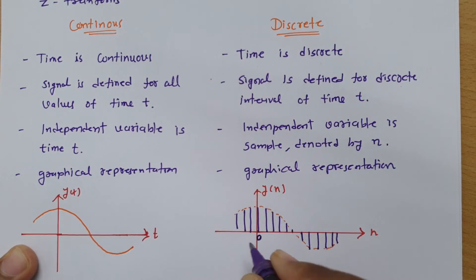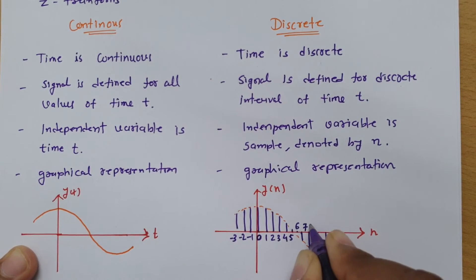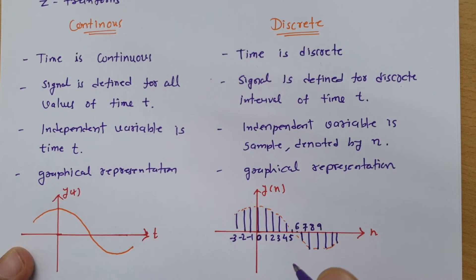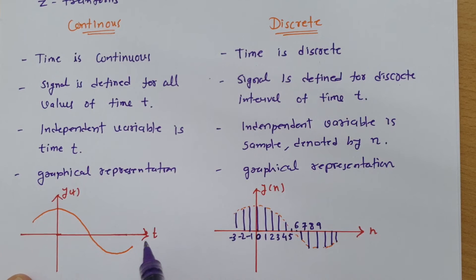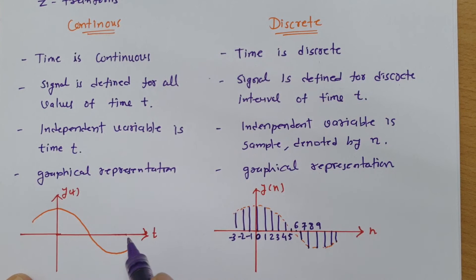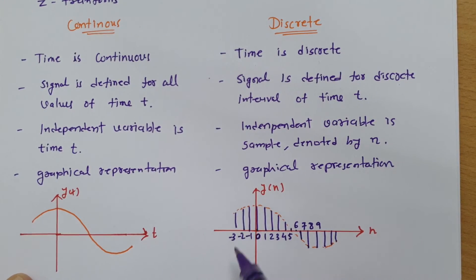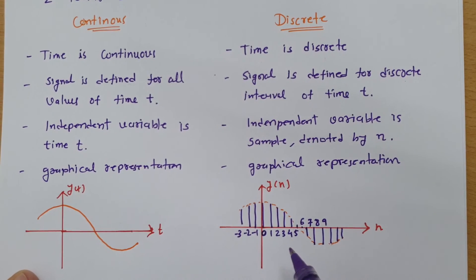So here, if I say this is a reference 0, then here minus 1 sample is there, minus 2, minus 3, and on the positive side 1, 2, 3, 4, 5, 6, 7, 8, 9. This is how samples are there. This sample is denoted by variable n, and here the signal is continuous with respect to time. One can say the value of magnitude for this given signal y of t is happening at all intervals of time. So to analyze this signal in the frequency domain, we go for Fourier transform or Laplace transform, while in case of y of n, which is a discrete signal with values at particular instants only, we should be going for Z-transform to analyze that signal in the frequency domain.